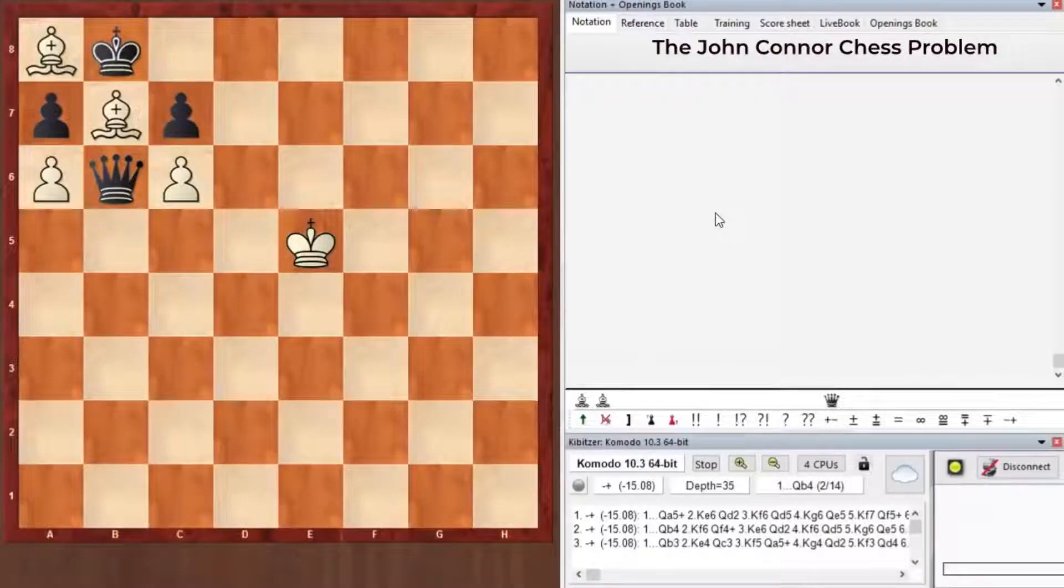But so far even Komodo hasn't found a solution. And now I recommend you to think for yourself how to win here with Black. This is purely at the level of ideas. You need to understand, at the level of ideas, how to win here with Black. Catch the right concept and implement it. I recommend you to pause the video and try to solve this problem.